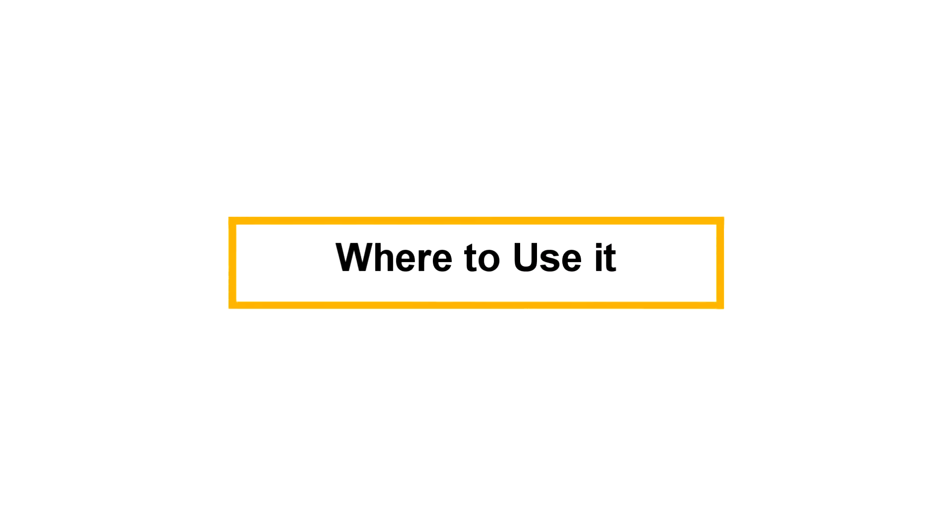So where are you going to use pattern interrupts? Ideally at the very beginning of an interaction. In copywriting, this is probably going to be in the headline — where you make a bold statement, say something very curiosity-inducing, or use interesting data and stats to break people's attention from what they would expect. Try to go against the grain and think about what your buyer persona is interested in, what they're thinking, what they're feeling, and then say something opposite to that to get their attention.